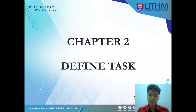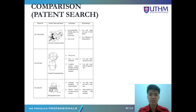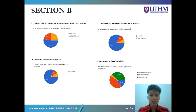I'm Lim Han Yang, and I'm going to discuss chapter two: defined tasks. First of all, we determined related products by looking into Google Patents and found some patent products. We then made a comparison between the patent search by comparing the advantages and disadvantages between those products. Next, we distributed some questionnaires to determine what the market needs, covering gender, age, profession, frequency of playing balls, time spent on cleaning balls, number of balls, sport ball playing, and the methods used to clean.